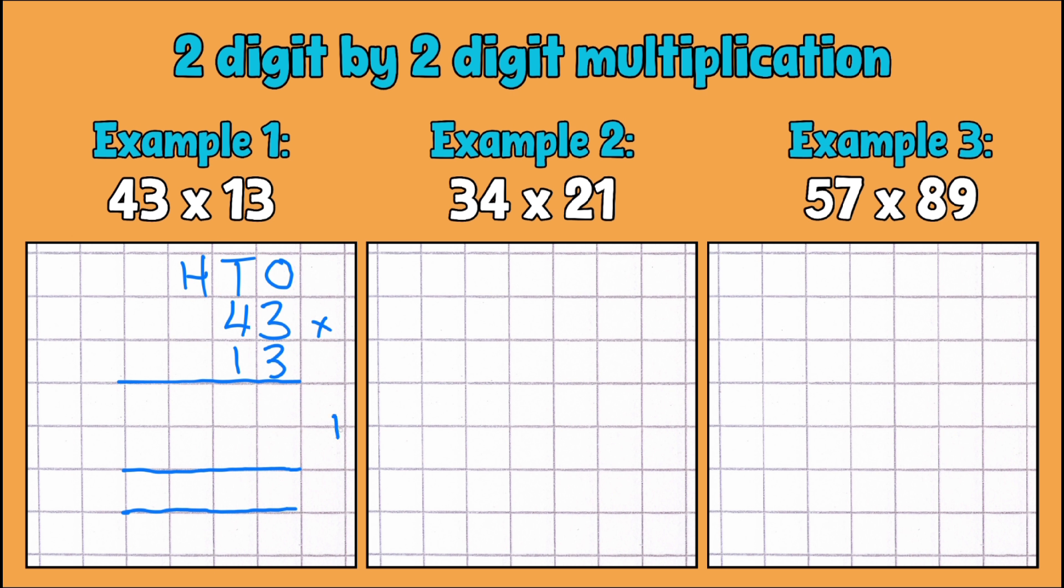And then finish it off with a final one because there is another part to this calculation as well. And as part of setting these ones up, this type of question, if you put a zero in the ones column on that second line that we've got, and I'll explain why in a moment.